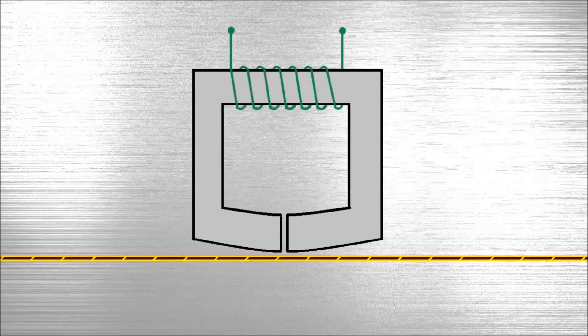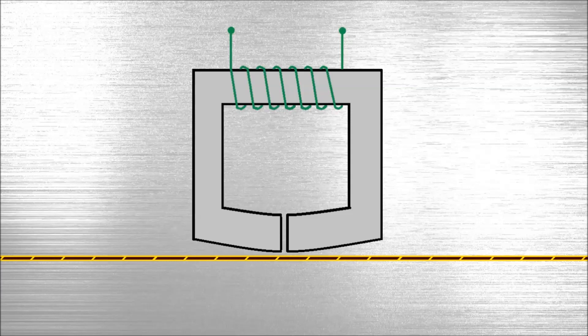When reading the tape, the exact opposite happens. The tape moves below the head and the magnetic signal on the tape generates a small current in the coil. This current is amplified and sent to the speakers to reproduce the sound.